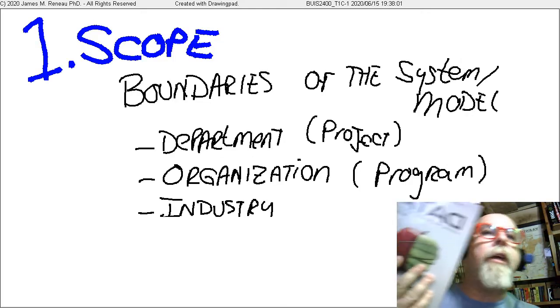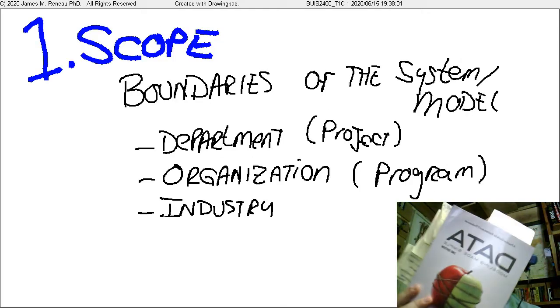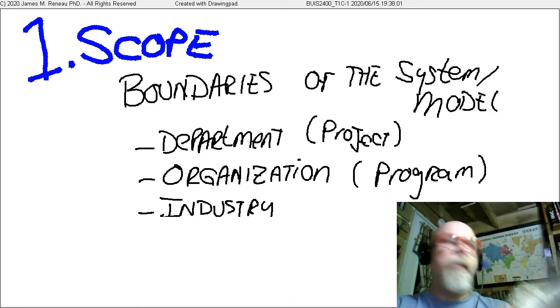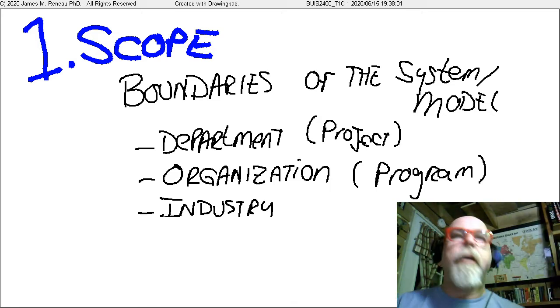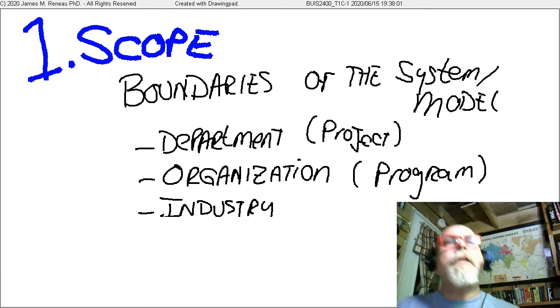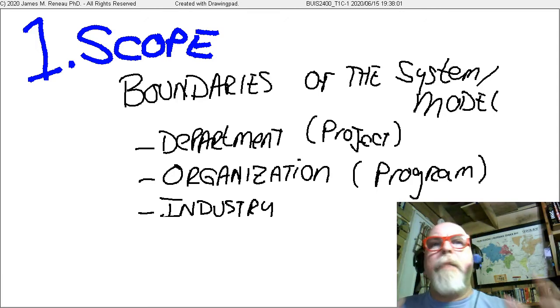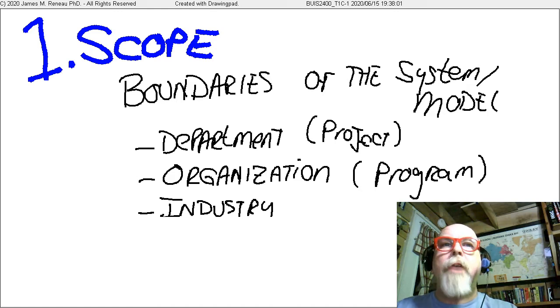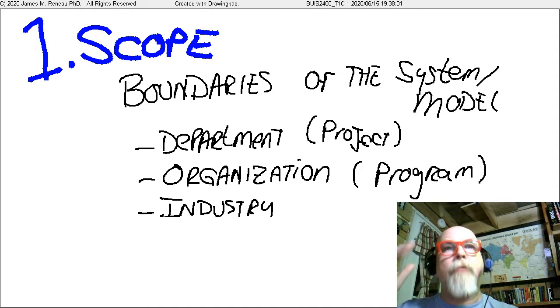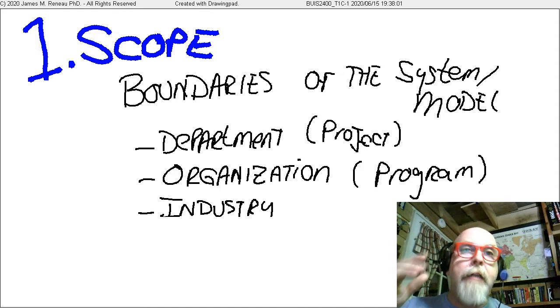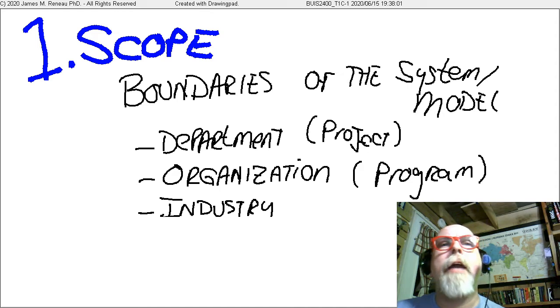This video accompanies Data Modeling Made Simple by Hoberman, and is Chapter 3 specifically. We've talked about a data model has to be concise and precise, contains relationships and contains only types, and we've talked about that.